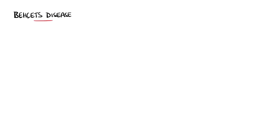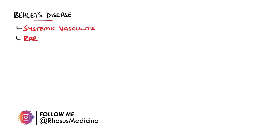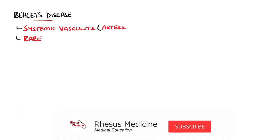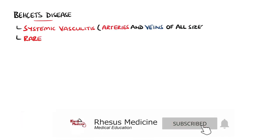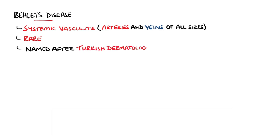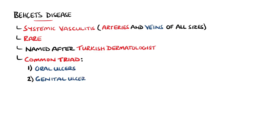Behçet's disease is a rare inflammatory condition — a systemic vasculitis that affects arteries and veins of all sizes. It was named after the Turkish dermatologist who first described it, which helps us remember that it is most commonly found in the Middle East and involves mucocutaneous lesions. It has a classic triad of painful mouth ulcers, genital ulcers, and uveitis.